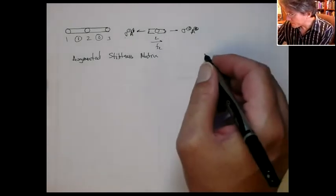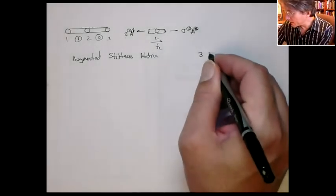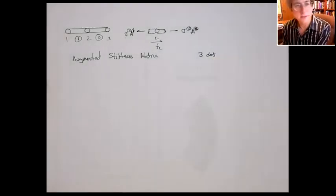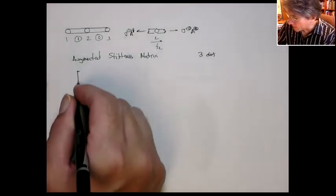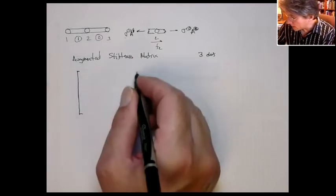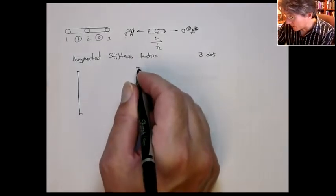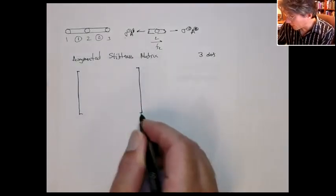So if you look at this system, we have three degrees of freedom for the whole system: U1, U2, and U3. So we know that the global stiffness matrix is in fact going to be a 3 by 3.